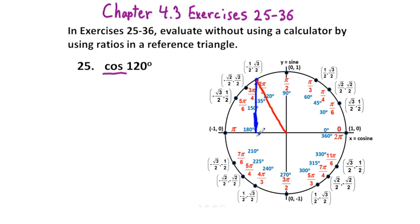Our cosine is going to be this value right here along the x-axis. Here we're going to have a 60-degree angle and this will be 30 degrees on top. The reference triangle will be 60 degrees between the x-axis and this hypotenuse, whose length is the radius of the unit circle, which is 1.